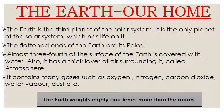The flattened ends of the Earth are its poles. Joh iske flattened end hain, unhein hum poles kehte hain. Almost three-fourths of the surface of Earth is covered with water. Three-fourth surface jo hai Earth ka, woh paani se bhara hua hai. Also, it has a thick layer of air surrounding it, called the atmosphere. Earth ke upar ek bahut hi patli si layer hai — hawa ki layer — us layer ko hum atmosphere kehte hain.